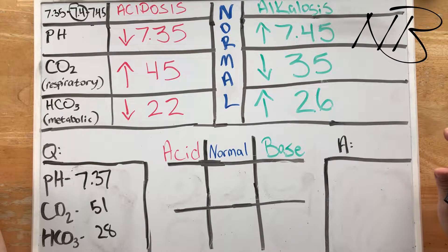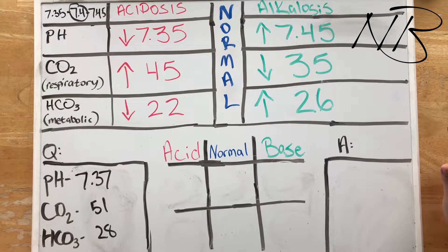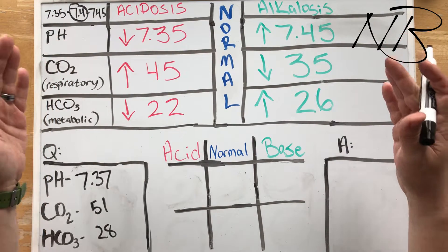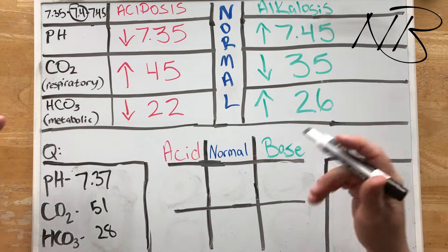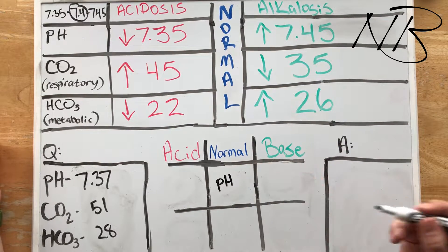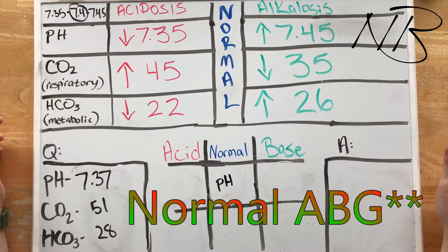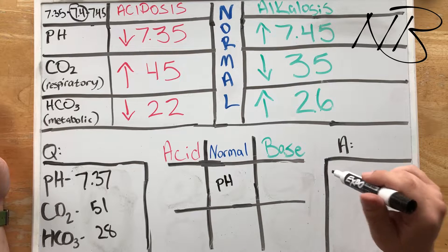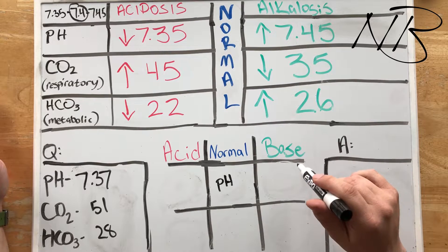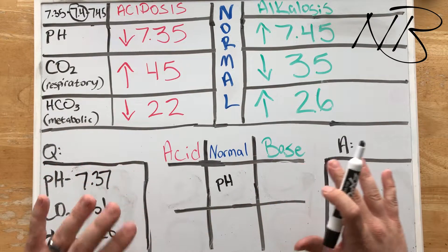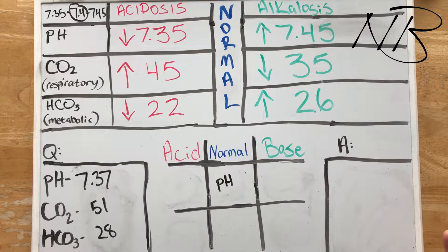For our very first fully compensated arterial blood gas question, here's what we are presented with. Our pH is 7.37, which is between 7.35 and 7.45, so we know our pH is normal. But we can't automatically assume this is a normal blood pH — because it is not. Every single fully compensated ABG question is going to look like you have a normal pH, but that's not the case. So it's always important to take a look at your other two numbers.